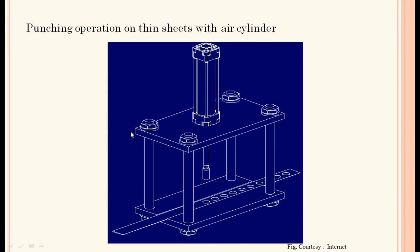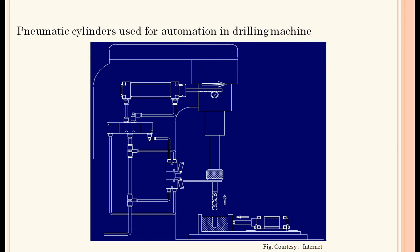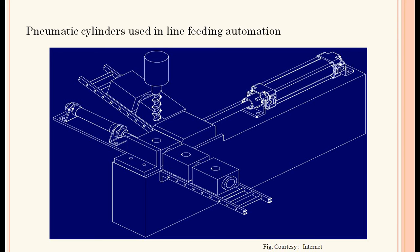Punching operation on a thin sheet with an air cylinder — pneumatic cylinders are used for automation. In a pneumatic drilling machine, the cylinder is arranged so the drill moves pneumatically, and another cylinder is used for clamping. Pneumatic cylinder is also used for line feeding automation.